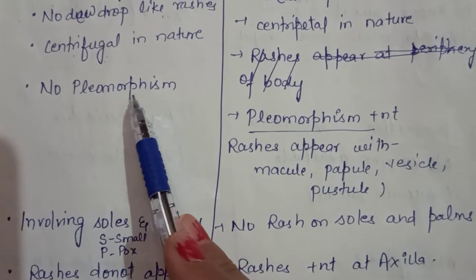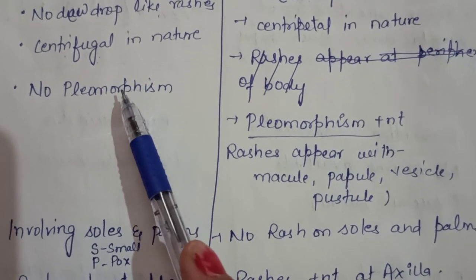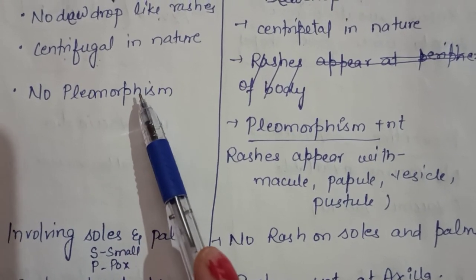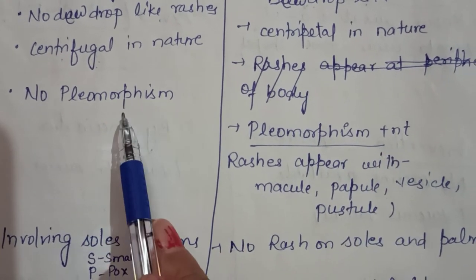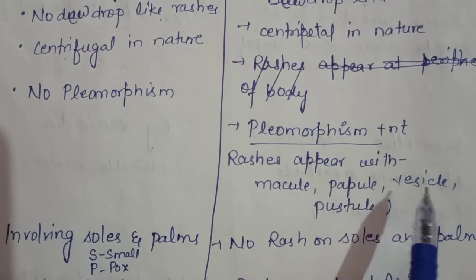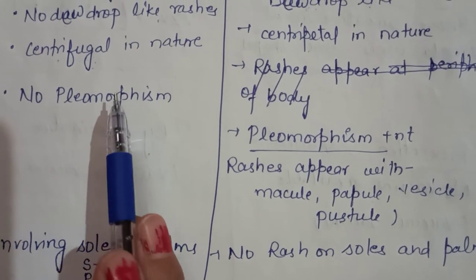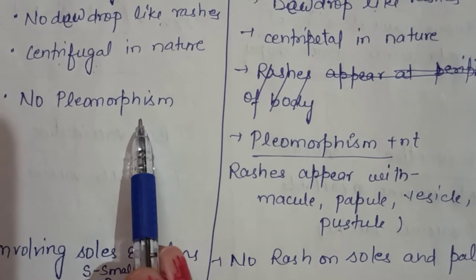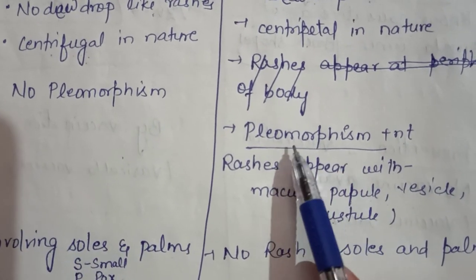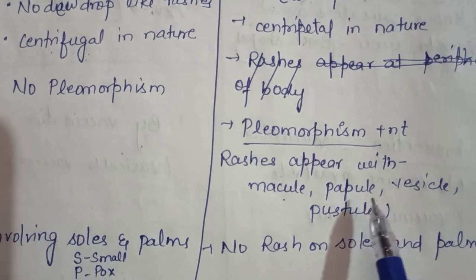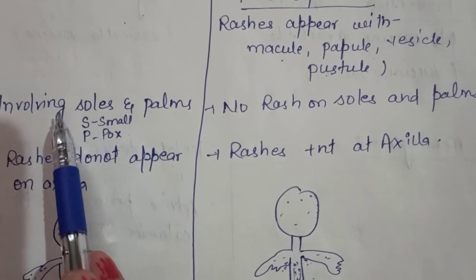In smallpox there is no pleomorphism, whereas in chickenpox pleomorphism is present. Pleomorphism means multiple different shapes or stages visible at the same time. Both diseases progress through stages — macule, papule, vesicle, and pustule — but in smallpox the entire body shows only one stage at a time. In chickenpox, macule, papule, and vesicle can all be present simultaneously, which is why pleomorphism is present in chickenpox.